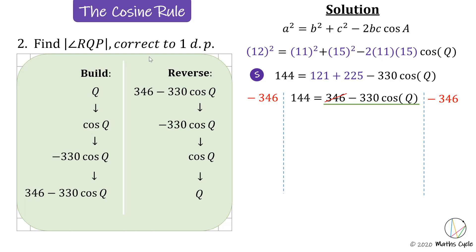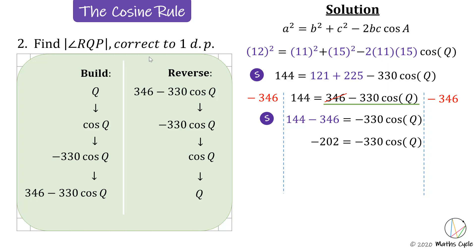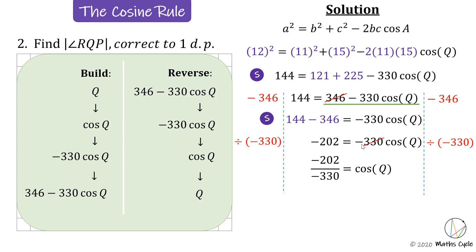Subtract 346 from both sides — the 346 is cancelled on the right, and on the left we have 144 minus 346, which simplifies to negative 202. So negative 202 equals negative 330 times cosine Q. To reverse the multiplication, divide both sides by negative 330 — that cancels on the right, and on the left negative 202 is divided by negative 330.